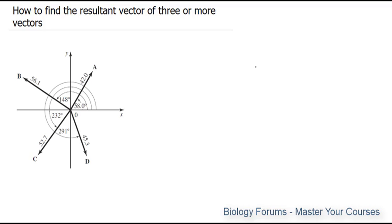In this video, I will demonstrate how to find the resultant vector of three or more vectors. So I have this highly complicated set of vectors here labeled A, B, C, and D. And what we want to do is find out systematically, mathematically, how to add them all up and find the resultant vector. Let's get started.